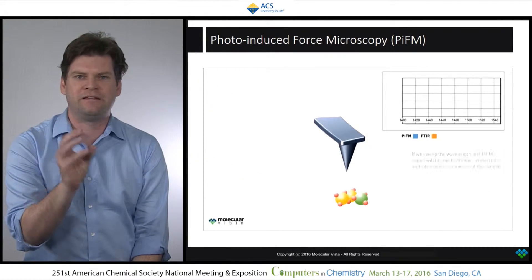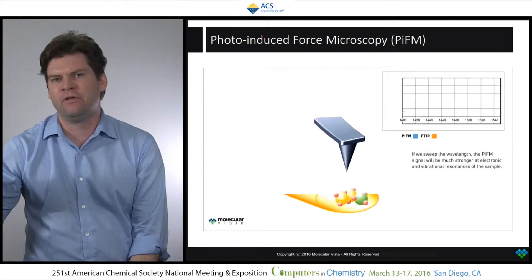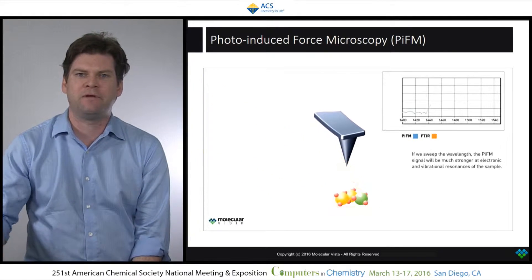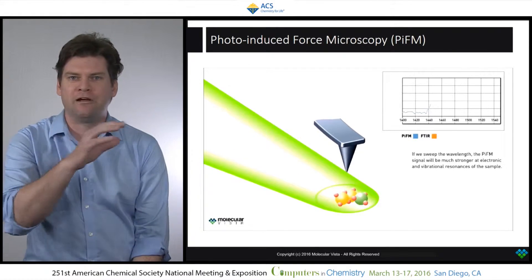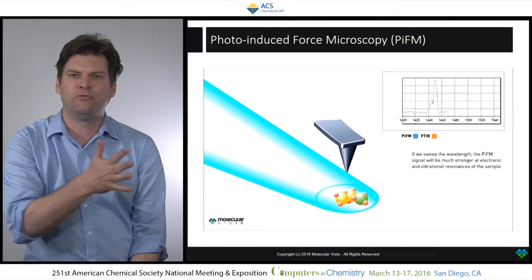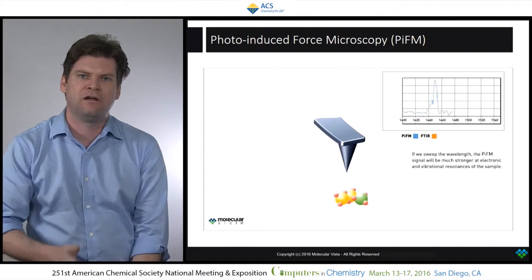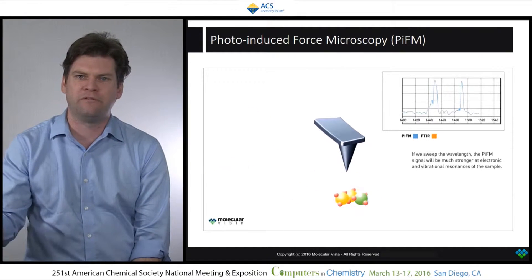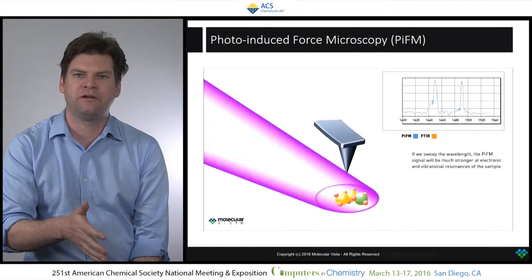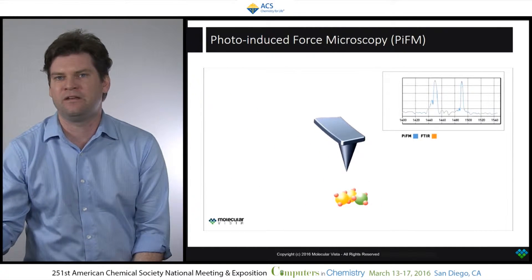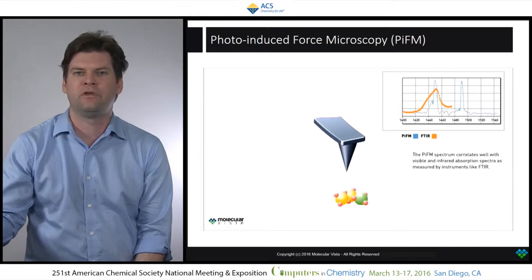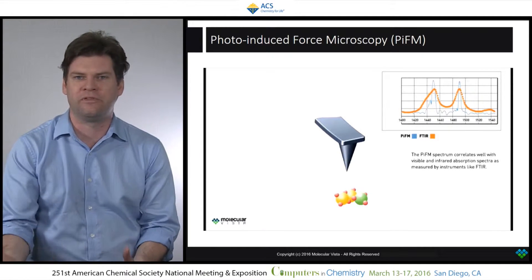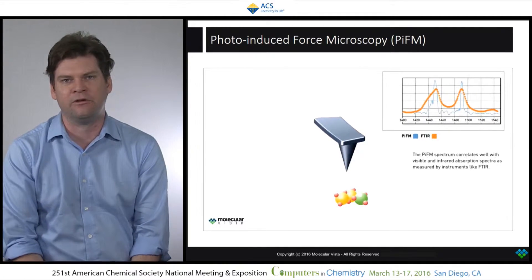We'll effectively take that signal, decouple it from the AFM signal, and generate a graph as we tune through wavelengths of the strength of that force. Here we're tuning through wavelengths from 1,400 wavenumbers to about 1,500 wavenumbers, and we're looking at how the PIFM agrees with FTIR — very, very good agreement.